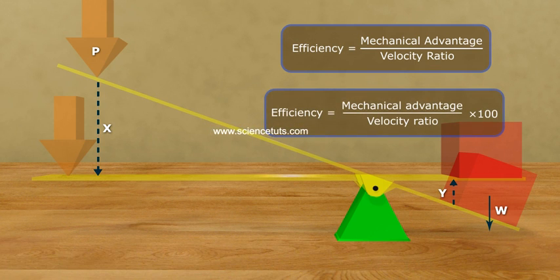Then, efficiency is equal to mechanical advantage by velocity ratio into 100.